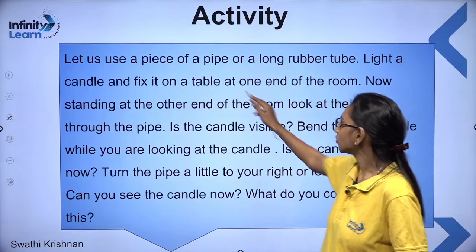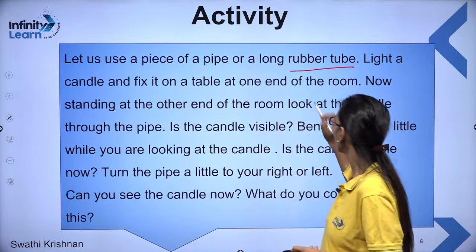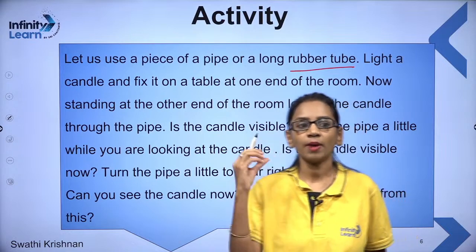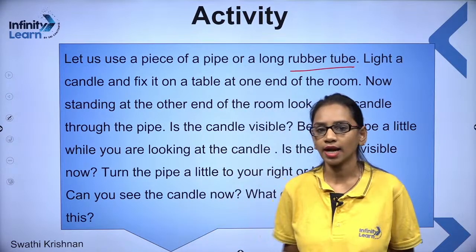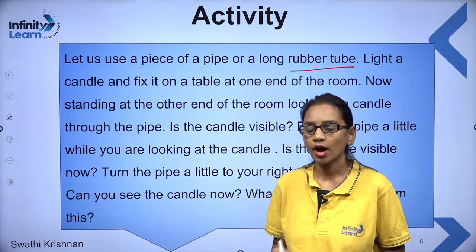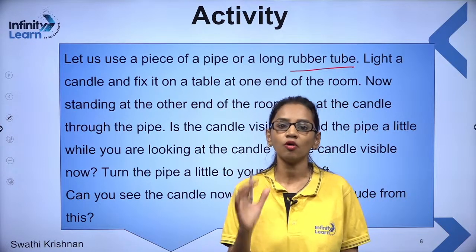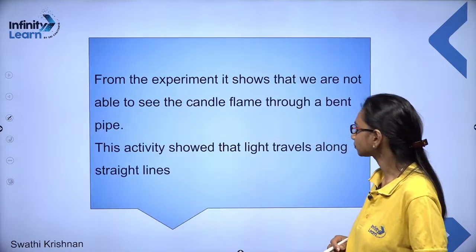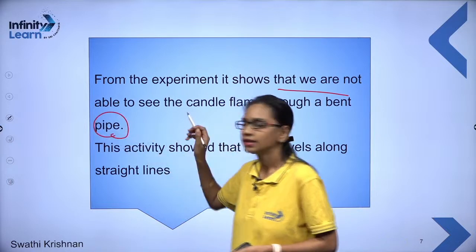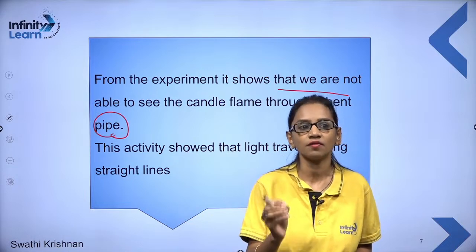What are we able to see? We use a piece of pipe or a long rubber tube, fix a candle on a table at one end of the room, and look from the other side. Through the straight pipe you can see the candle. But through the bent pipe, you will not be able to see the candle. The reason is a property of light — because light is hitting the bent wall and not going straight. So looking at a candle through a straight and a bent pipe, from this experiment it shows that we are not able to see the candle flame through a bent pipe. This is a normal activity we can do at home to check whether light travels in a straight line or not.